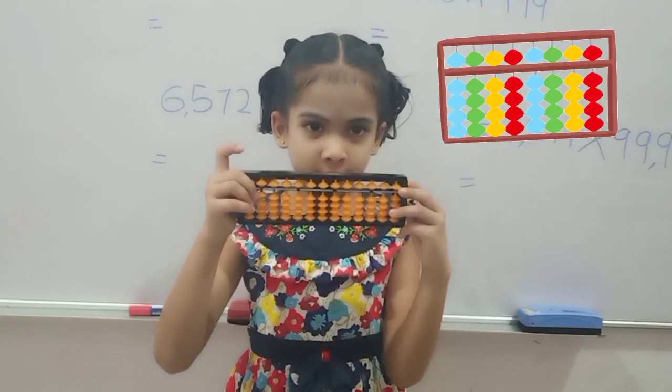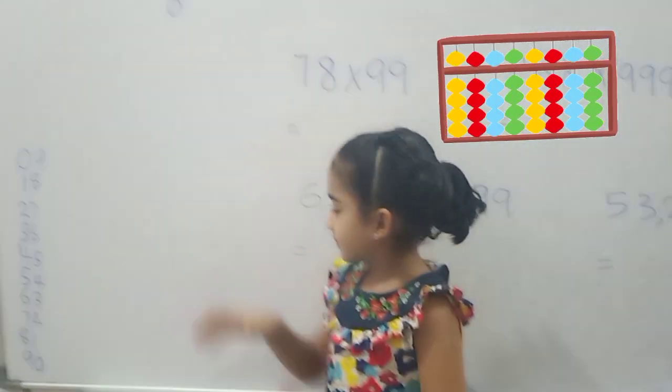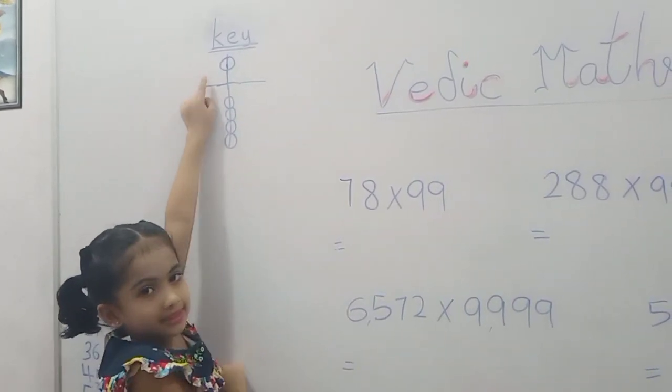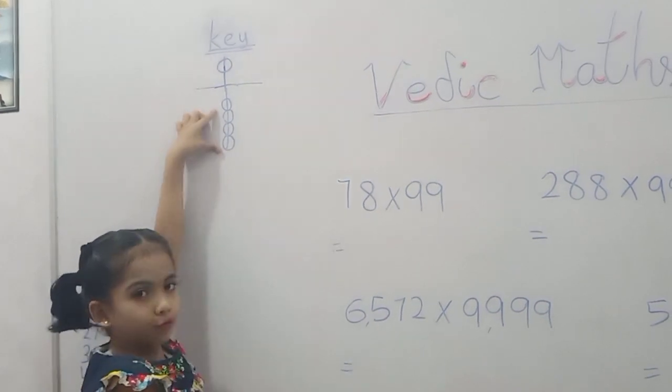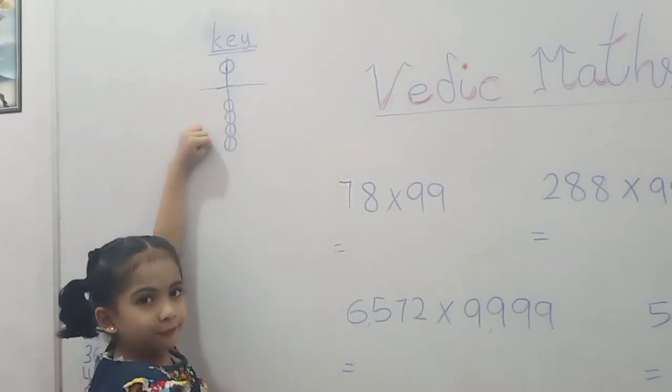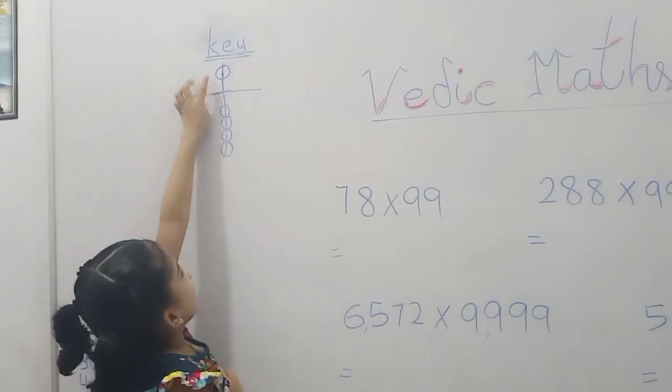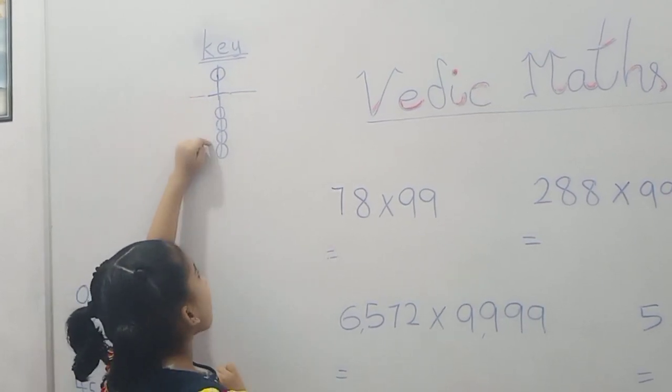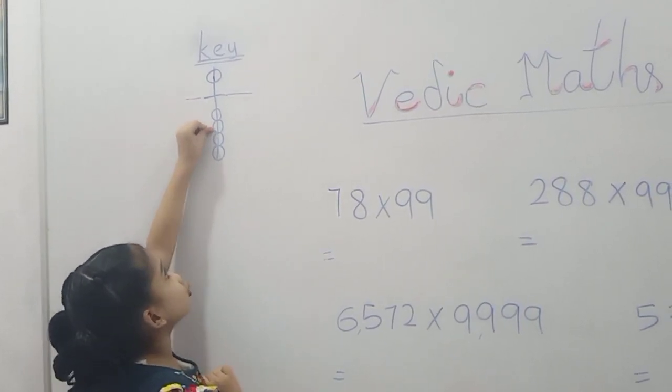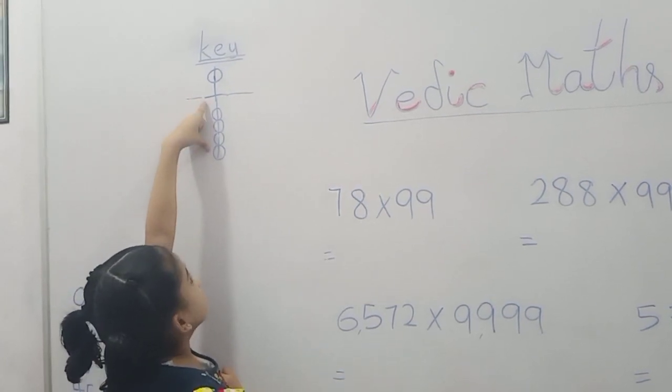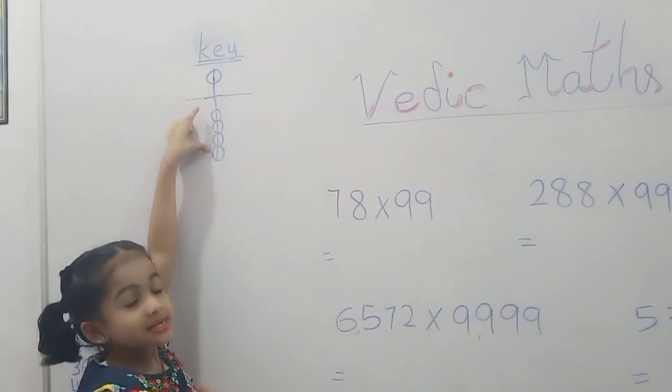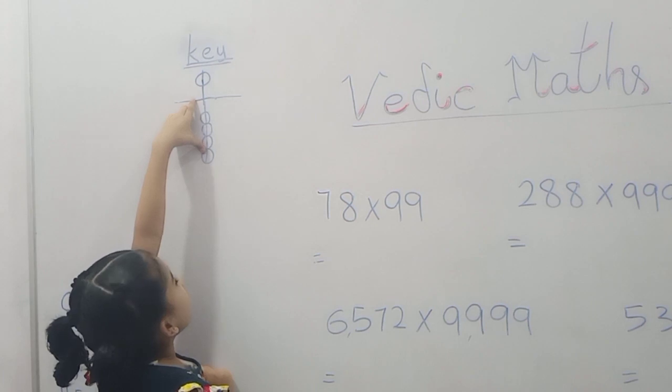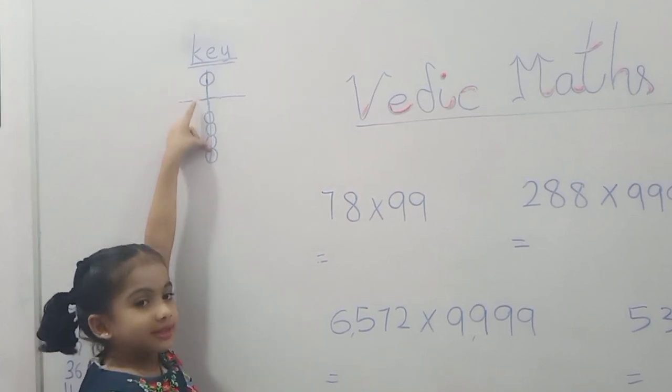This is your abacus looks alike. The upper bead is 5 and lower beads are 4: 1, 2, 3 and 4. For example, you take 5, so you have 4 here. So 5 key is 4. For example, you take 2, you have 7. So 2 key is 7. For example, you take 3, 6 left here. So 3 key is 6.